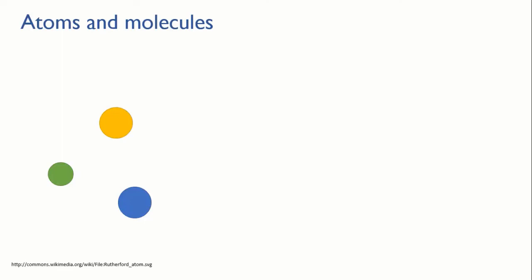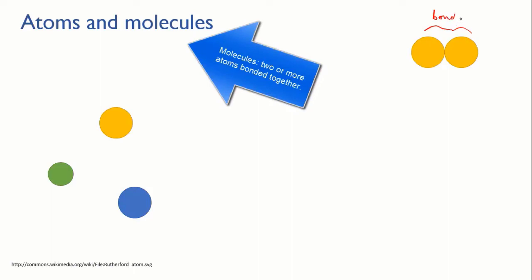If you start joining atoms together, chemists say the atoms are bonded together. If you join them together into groups, then those groups are called molecules. So a molecule is any group of two or more atoms that are bonded together. Some substances are made up of individual atoms, while others are made up of molecules.